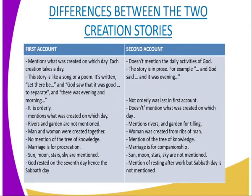While in the second account of creation, rivers and gardens are mentioned. In the first account of creation, man and woman were created together. But in the second account of creation, woman was created from man's rib — man was created first, then woman was created out of man's rib.